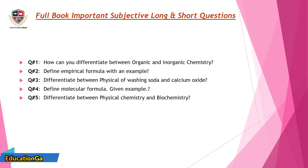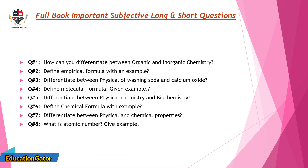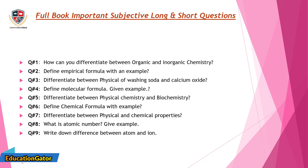Question 5: Differentiate between physical chemistry and biochemistry. Question 6: Define chemical formula with example. Question 7: Differentiate between physical and chemical properties. Question 8: What is atomic number? Give an example. Question 9: Write down the difference between atom and ion. Question 10: Define free radical and give an example.